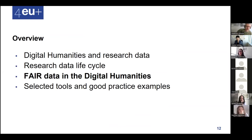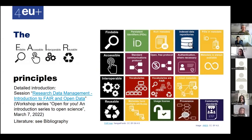In this section I will talk about FAIR data in the digital humanities. For many of you this will be a recap — there was a detailed introduction session called 'Research Data Management: Introduction to FAIR Open Data' some weeks ago. You will find here all 15 FAIR principles listed again. FAIR stands for Findable, Accessible, Interoperable, Reusable. For Findable: persistent identifiers have to be in the metadata, the metadata has to be enriched, and stored in repositories which have indexes.